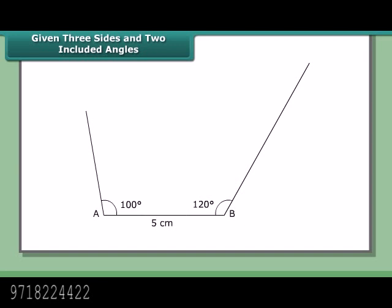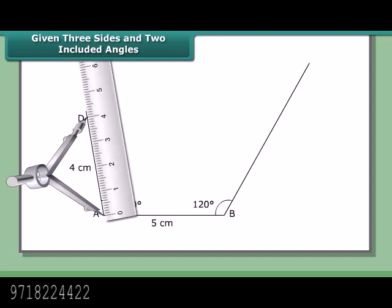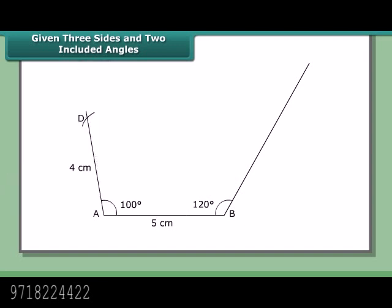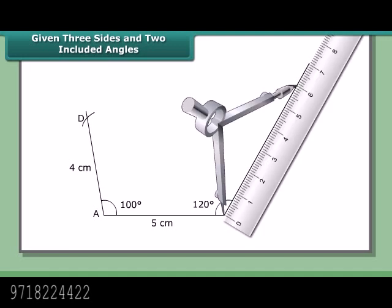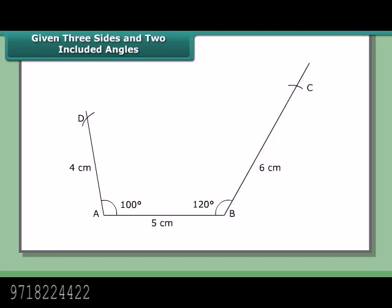3. Mark off distance AD = 4 cm and BC = 6 cm. 4. Join CD. ABCD is the required quadrilateral.